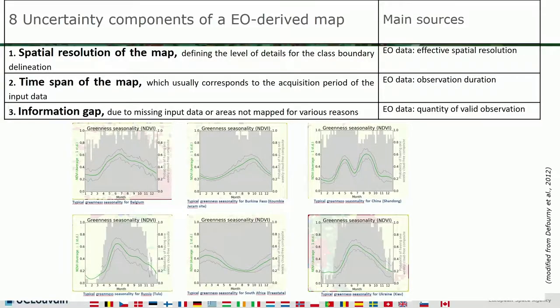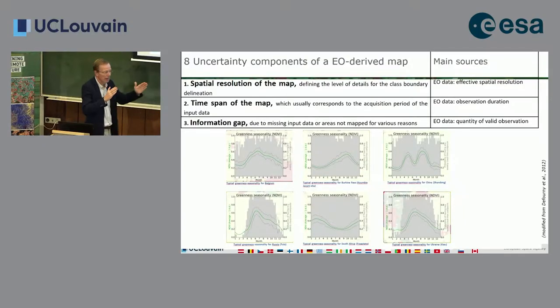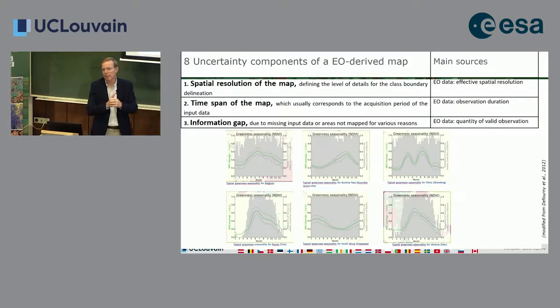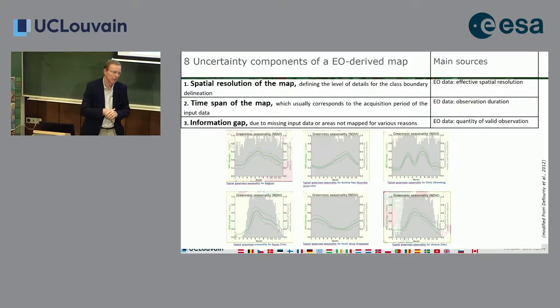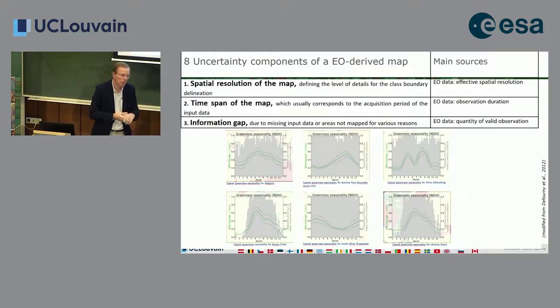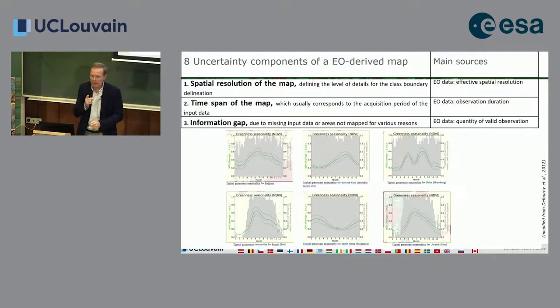The first component is the spatial resolution of the map—a big constraint coming from the measurement instrument. The second is the time span of the map. For example, when you say you produce a cropland map, does it exist? For what period? Can you tell, when you process 12 months of data, for what period your cropland map is valid?